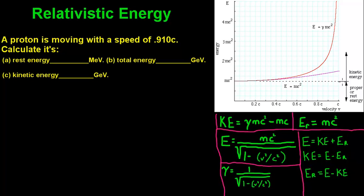This dotted black line is going to be your rest energy, E_R. This purple line is going to be your kinetic energy, which equals gamma times mass times the speed of light squared minus mc². And then this red line right here is going to be your total energy, E. I put a lot of these equations just for simplification, but you can pretty much derive them just from having one of them.